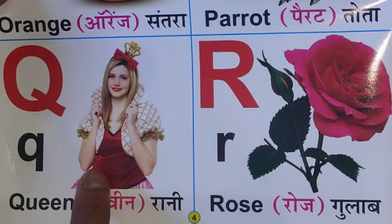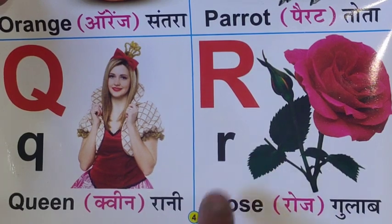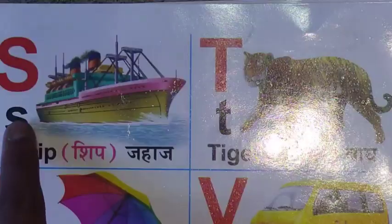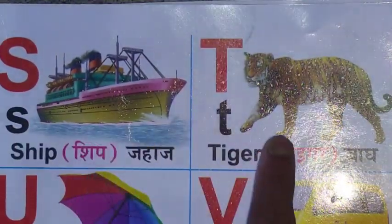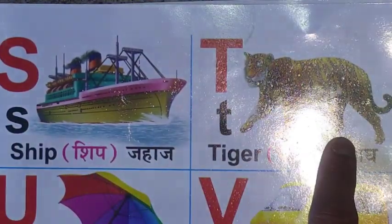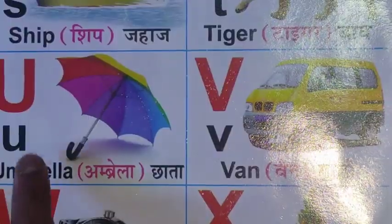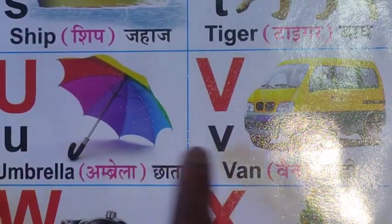Q for Queen, R for Rose, S for Ship, T for Tiger.